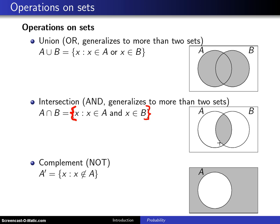Finally, the last operation is complement, and you can think of the word not. When you see A complement, A complement is the set of all X such that X is not an element of A, and that is the shaded area off to the right in the Venn diagram.